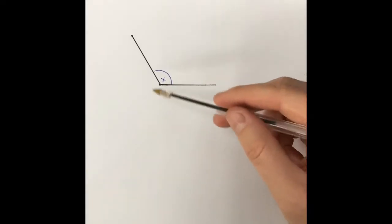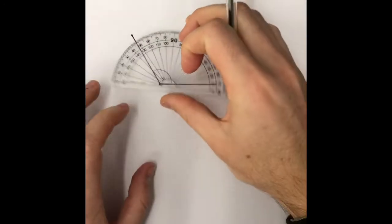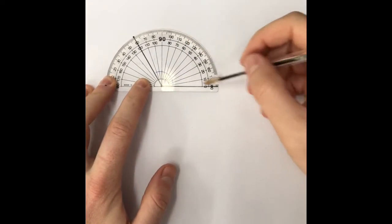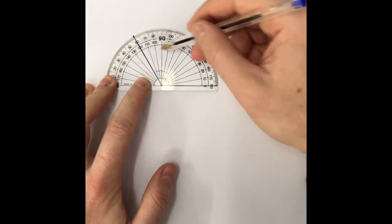We want to find X, so protractor again, pop in the middle, line it up, start from here, and you're counting that way.